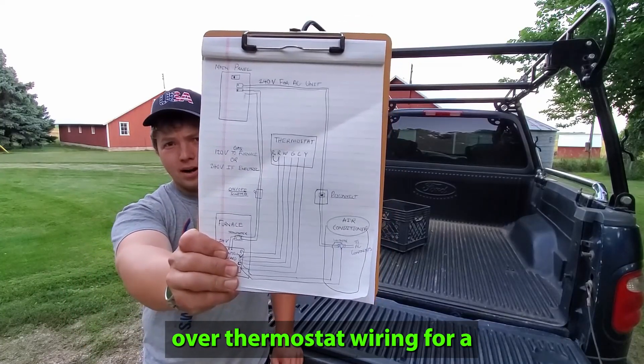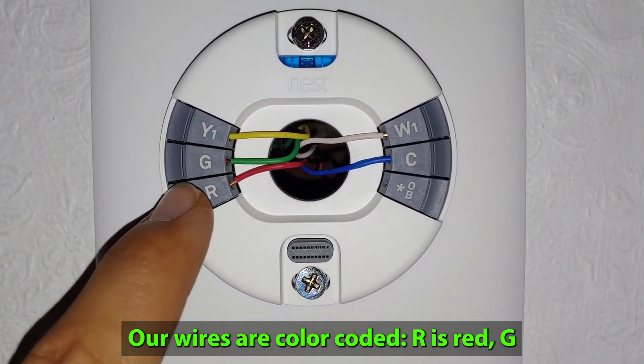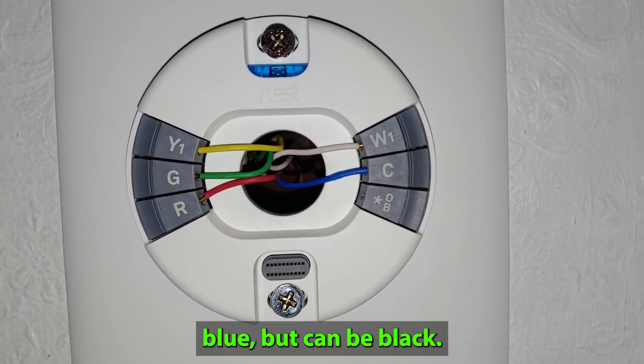Today we're going to be going over thermostat wiring for a one heat, one cool system. Our wires are color-coded. R is red, G is green, Y is yellow, W is white, and common is blue but can be black.